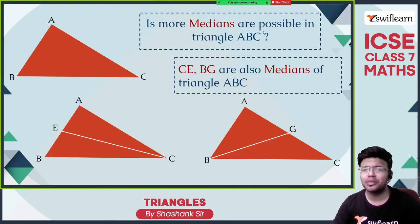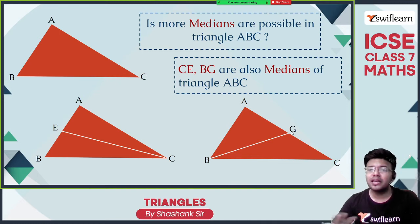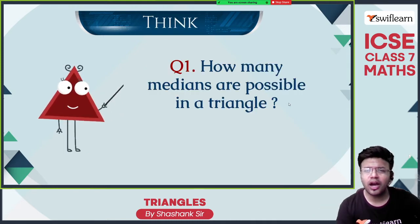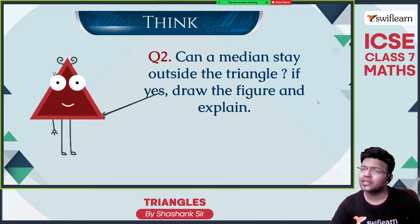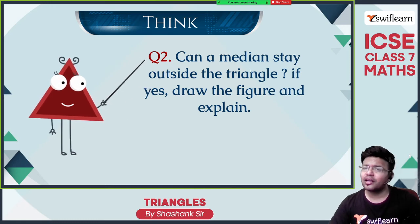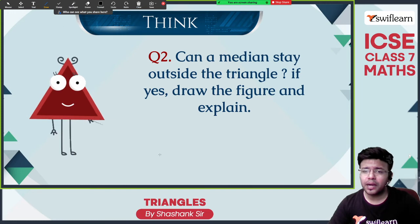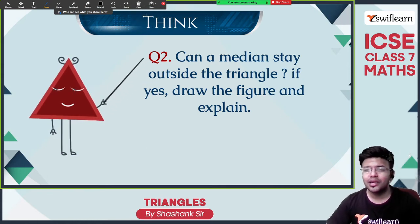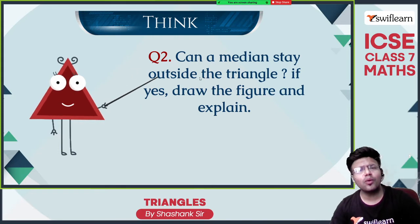Is more than one median possible? Yes, of course. EC is also a median, BG is also a median. In total, we can draw three medians — a triangle will have three medians. How many medians are possible in a triangle? It has three sides, so three medians are possible. Can a median stay outside the triangle? By definition, a median is a line segment joining the middle of a side and the opposite vertex. No matter how you draw a triangle — isosceles, acute, or obtuse — the midpoint will always be inside the triangle, so a median cannot be drawn outside the triangle; it always stays inside.